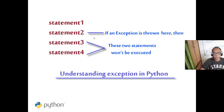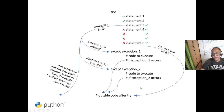If an exception comes at a particular line, the statements after it in the try block won't be executed. An exception may or may not happen, so you have to be very careful. If you think statement 3 or statement 4 must always be executed, it should be in your finally block. You can write multiple except clauses for the exceptions you are expecting, and a finally block for anything that must always run.